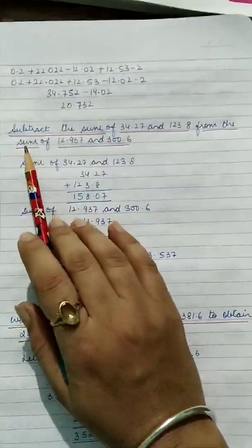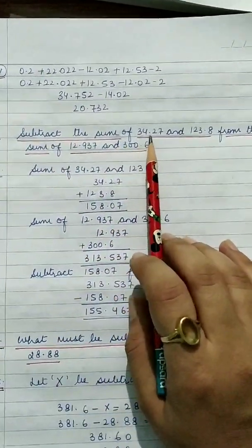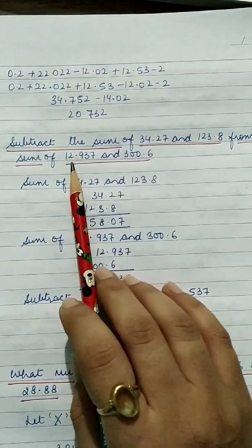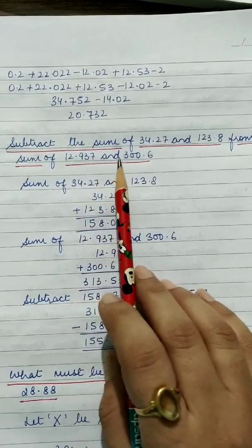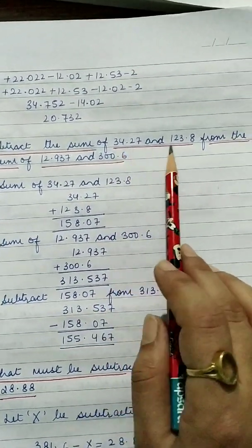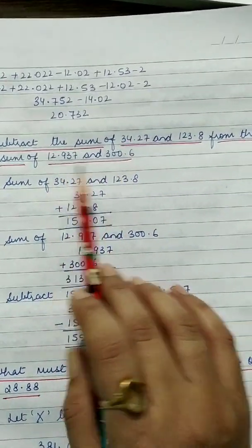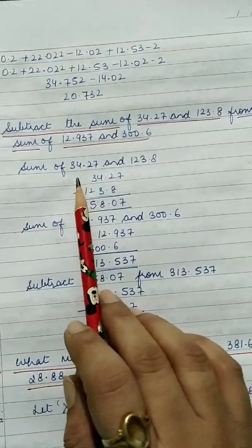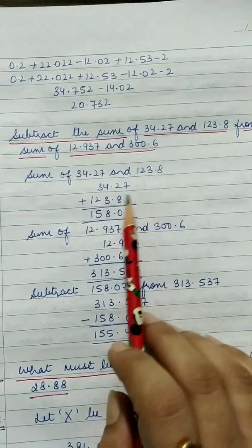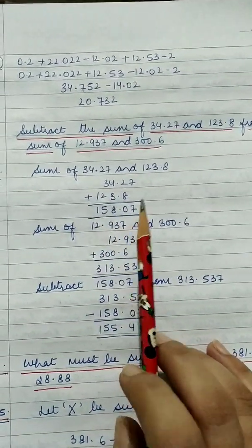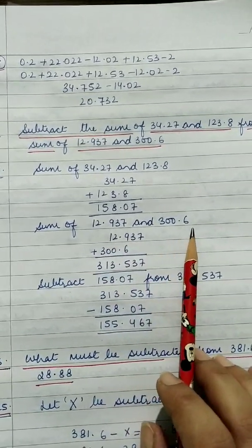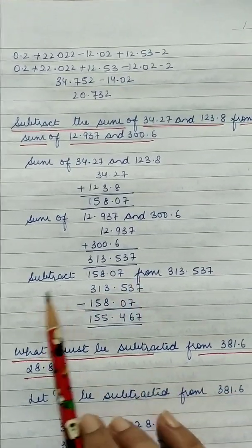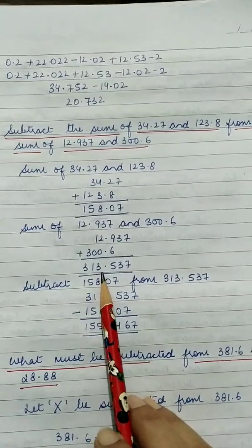Question number 4: Subtract the sum of 34.27 and 123.8 from the sum of 12.937 and 300.6. We need to add each pair of numbers and then subtract. The sum of 34.27 and 123.8 is 158.07. The sum of 12.937 and 300.6 is 313.537.